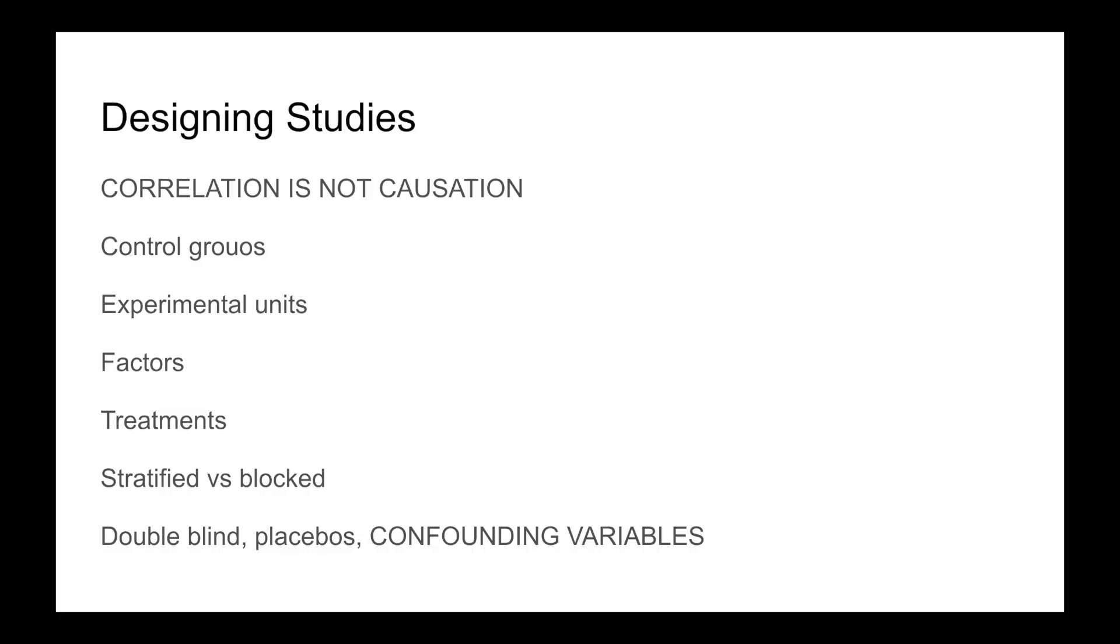Otherwise, if you are working with an observational study—observational study, that's an important word—like a poll, then it's just an association or correlation, not causation. Correlation, by the way, is just a linear association between two variables. Association is the broader term. Also note control groups, experimental units, factors, treatments, and the difference between stratified and blocked randomized designs. Double blinds are great but not always possible. Placebos are used in controls. Matched pairs are great for eliminating confounding variables. Confounding variables suck. I recommend you do more research.